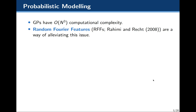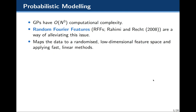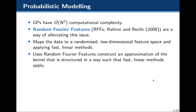Random Fourier features, or RFFs, are a way of alleviating this issue. RFFs map the data to randomized low-dimensional feature spaces, and once we've done that, we can apply fast linear models on top of them. This method uses RFFs to construct an approximation of the kernel that is structured in such a way that fast linear methods apply.